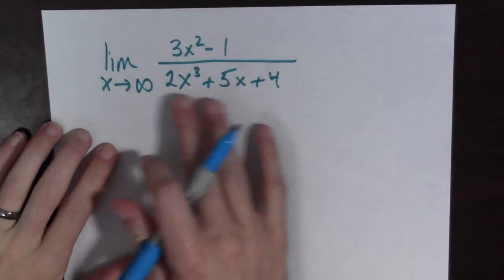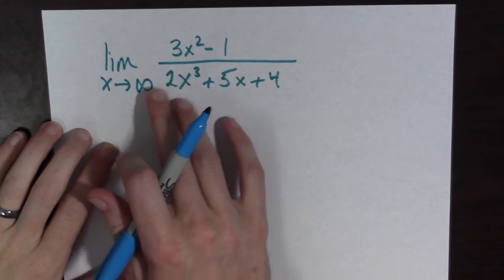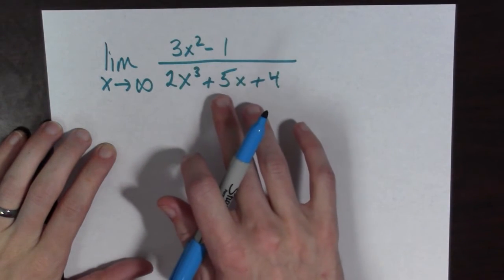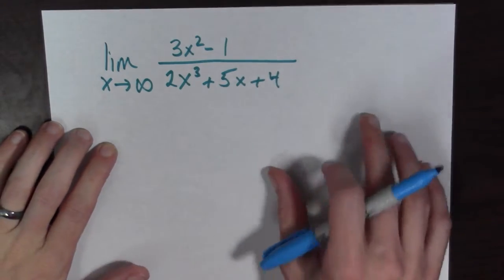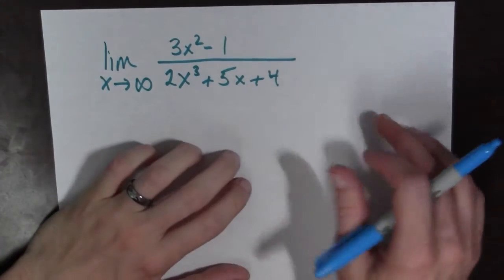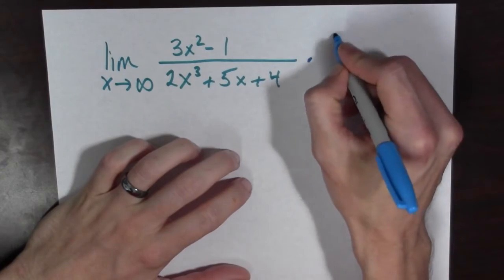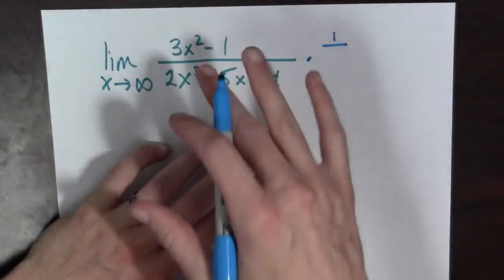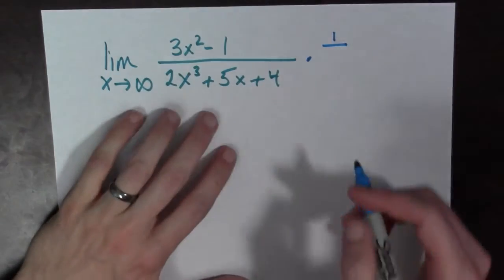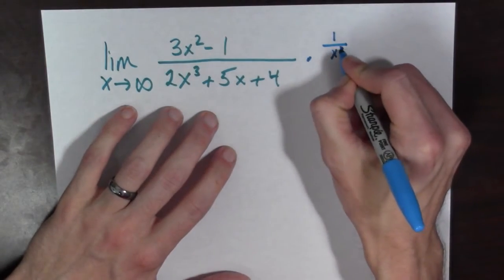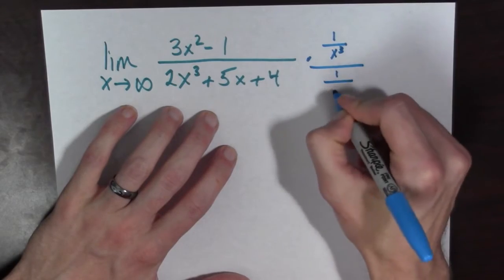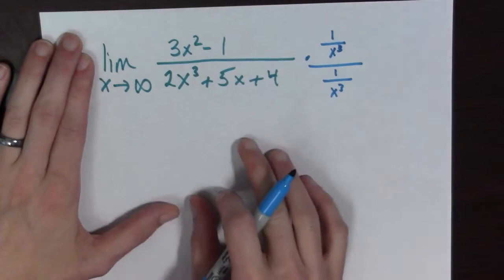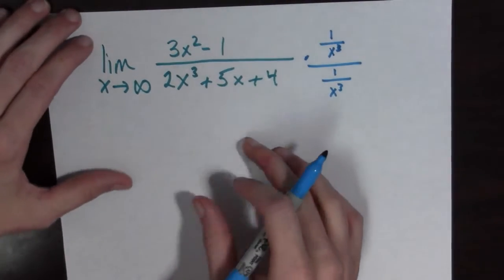Next example. We have the limit as x goes to infinity of 3x squared minus 1 all over 2x cubed plus 5x plus 4. What we're going to do is multiply by 1 over the highest power of x that we see, so it's going to be 1 over x cubed all over 1 over x cubed. This is basically multiplying by 1, and we see what happens.